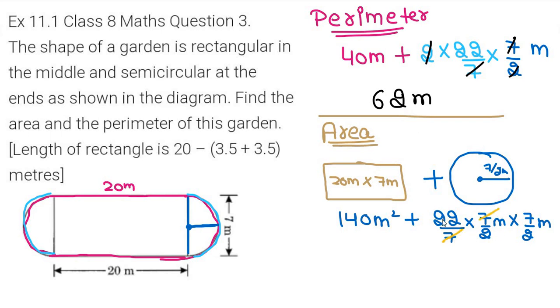If you calculate 7 times 7 and 2 times 2, you get 77/2. So you can say that 140 square meters plus 77/2, and when you add them, you get the total area.